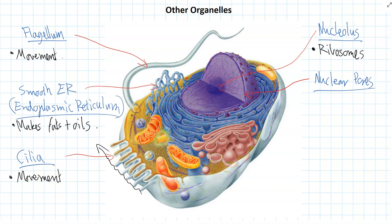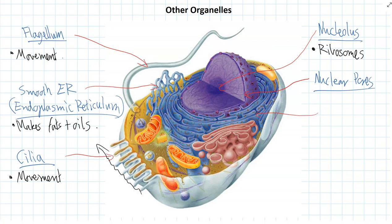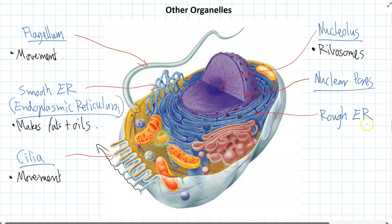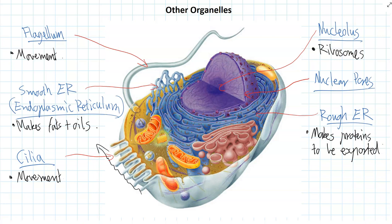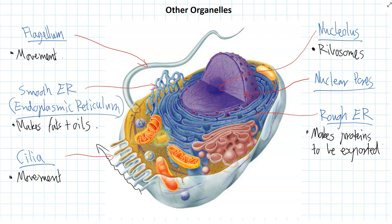There's another type of ER called the rough endoplasmic reticulum. You can see it has tiny little brown dots all over it — those dots are actually ribosomes stuck onto the membrane. That's why we call it the rough endoplasmic reticulum, because it looks like it has a rough surface covered in those ribosomes. These ribosomes make proteins ready to be exported out of the cell. Lots of cells need to make proteins and send them outside to somewhere else in the body — for example, the cells in your salivary glands produce tons of salivary proteins and export them out of the cell, so those proteins would be made in the rough ER.